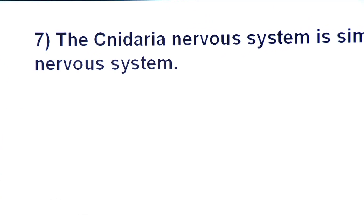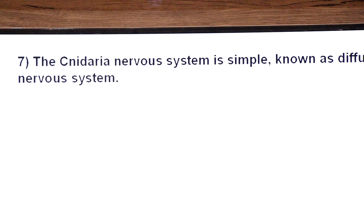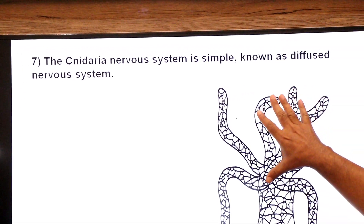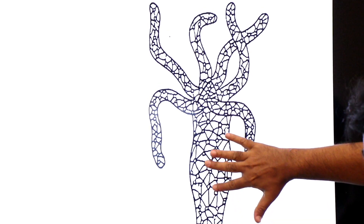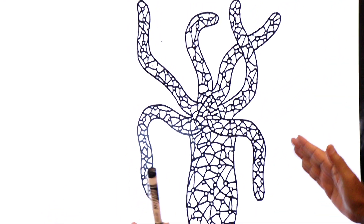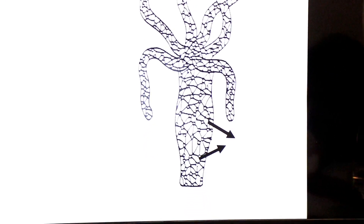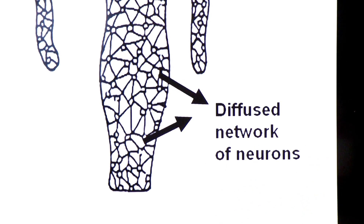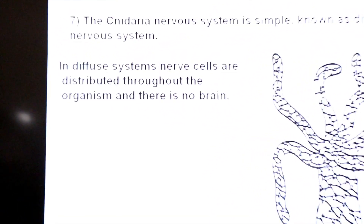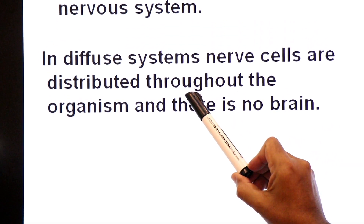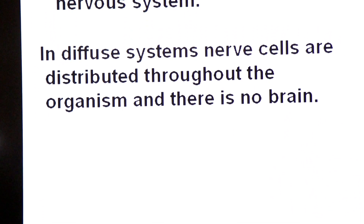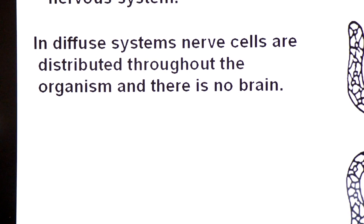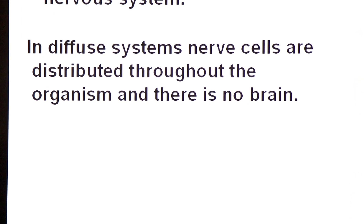Character number seven is the cnidarian nervous system. Their nervous system is simple and known as a diffuse nervous system. In hydra's diagram you can see many neurons distributed throughout the body in a diffuse network. In a diffuse nervous system, nerve cells (neurons) are distributed throughout the organism and there is no brain, no central command. These animals do not have a CNS (Central Nervous System); they have a DNS (Diffuse Nervous System).